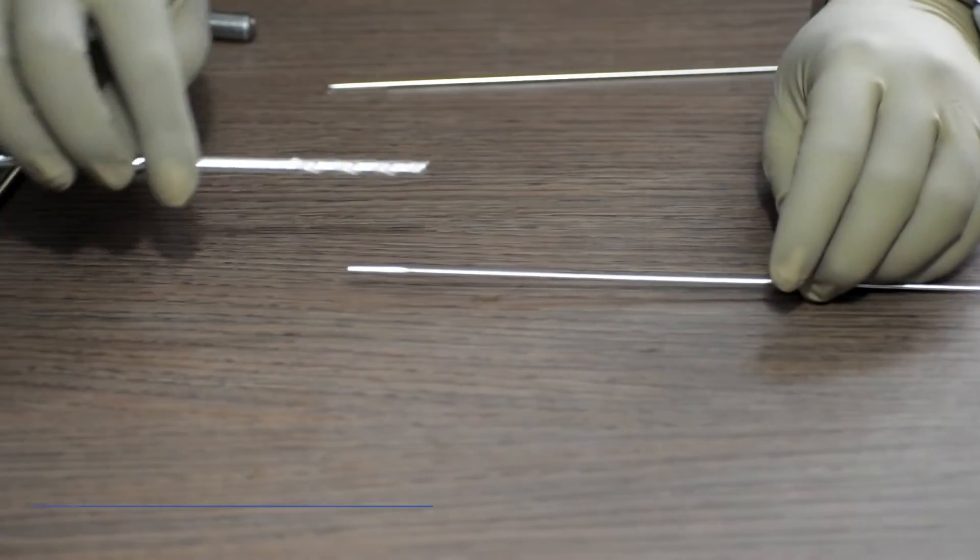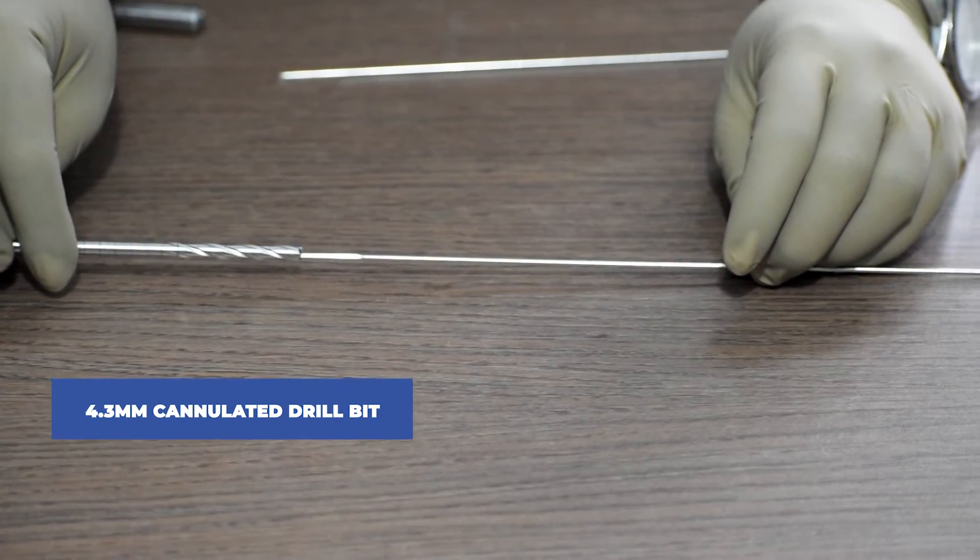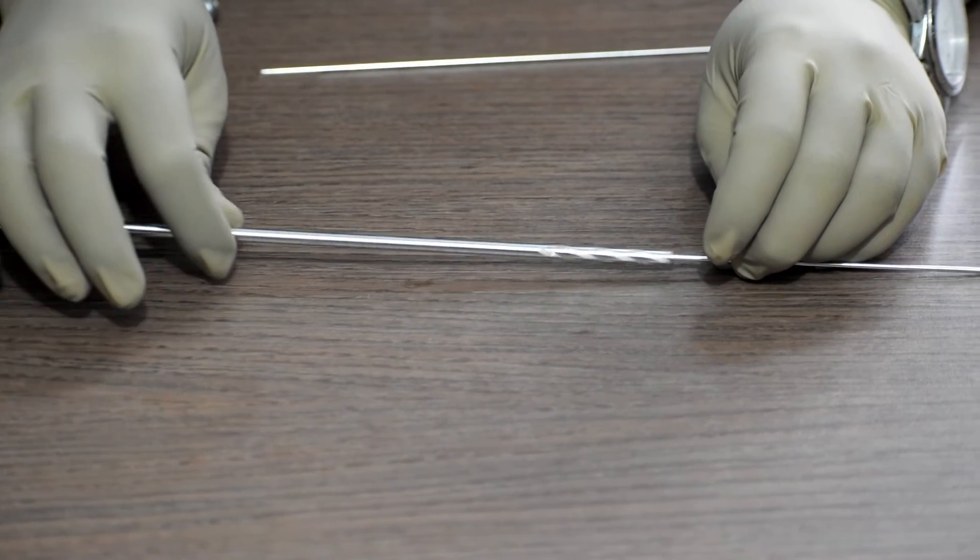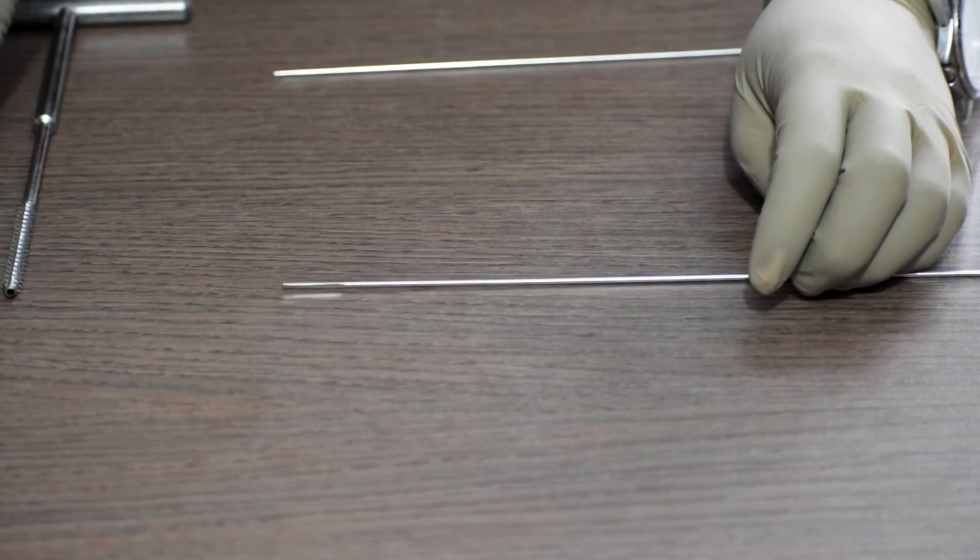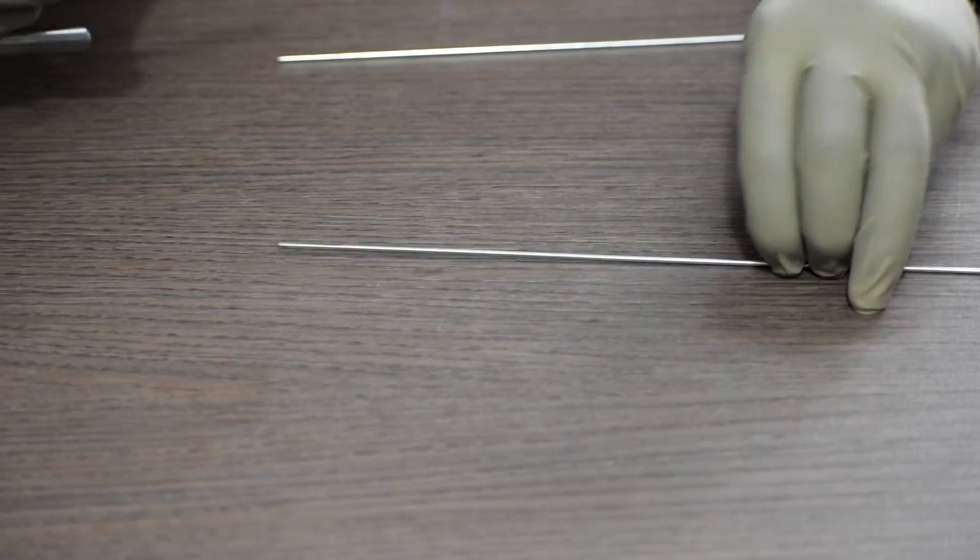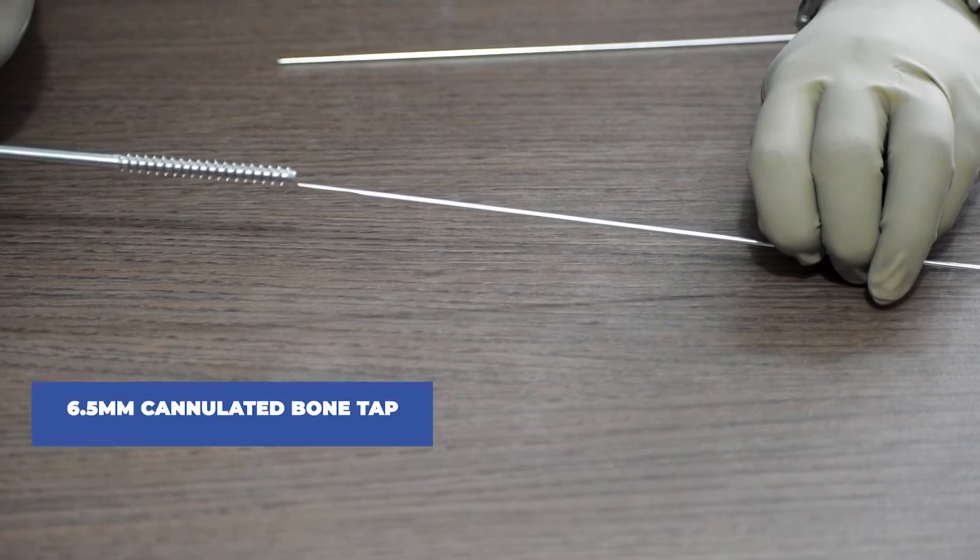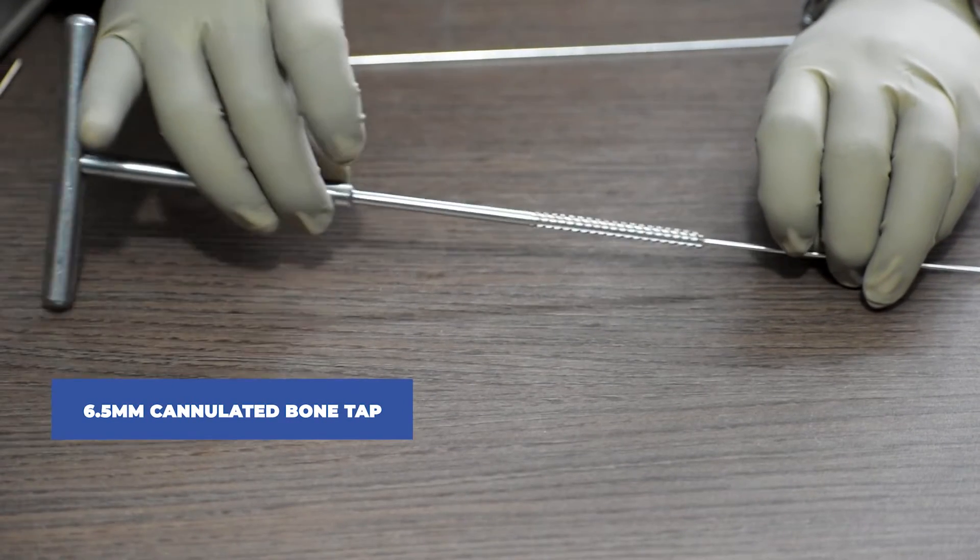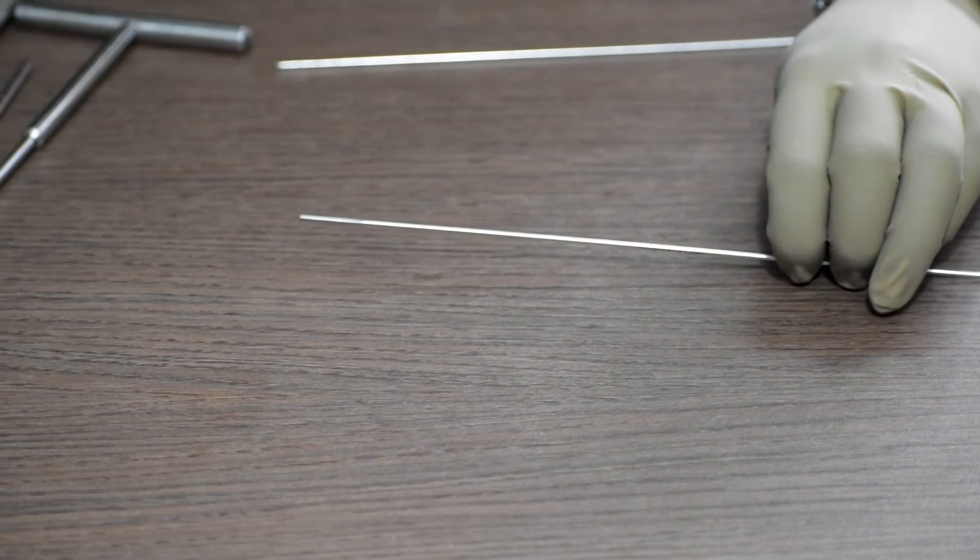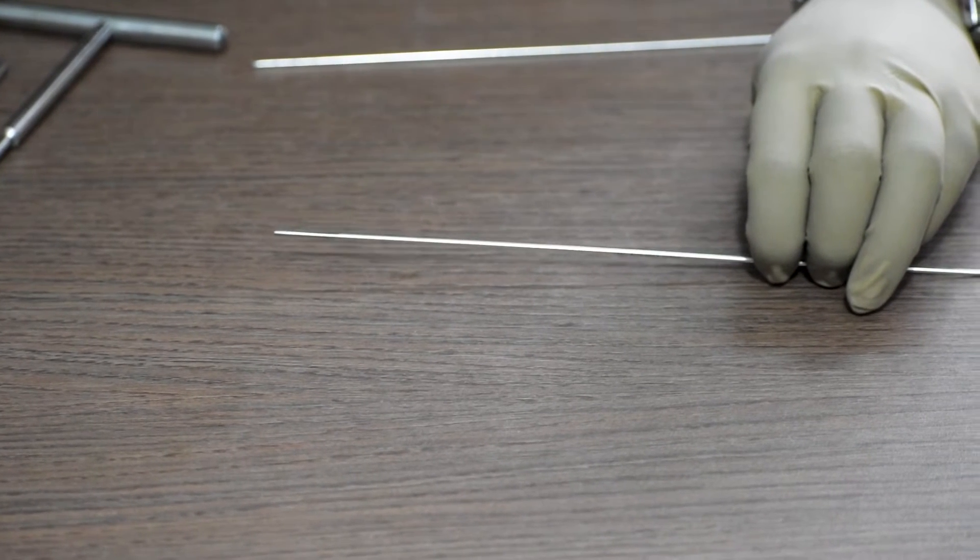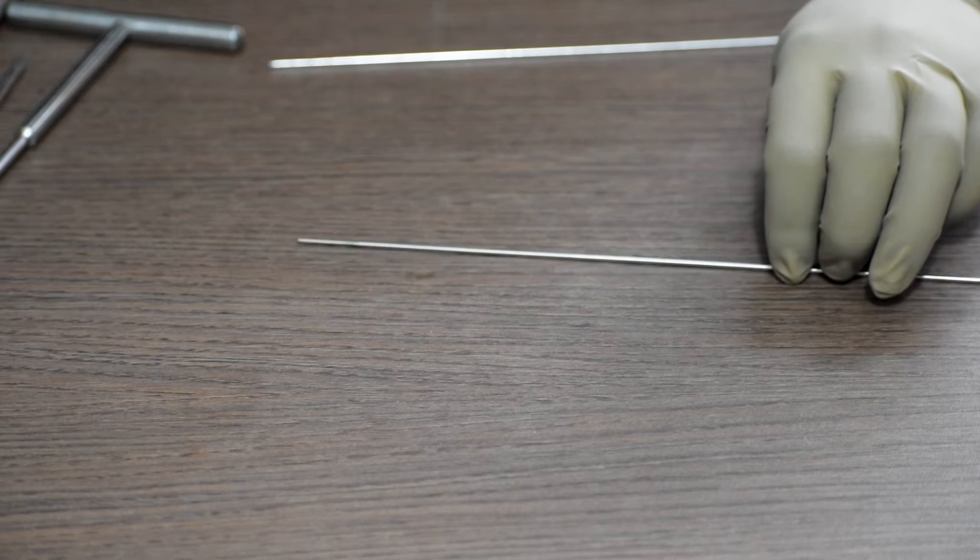Then, we will drill with a 4.3mm cannulated drill bit. Then, we will tap with a 6.5mm cannulated bone tap. In each of these cases, this guide pin or guide wire will pass through the hollow cannulated region of each equipment.